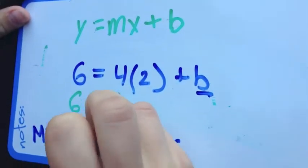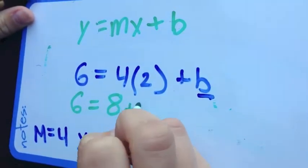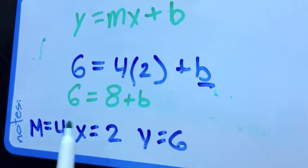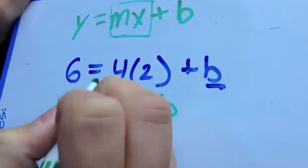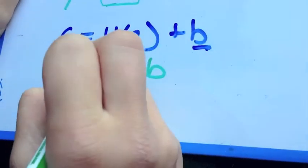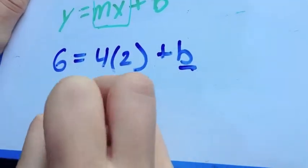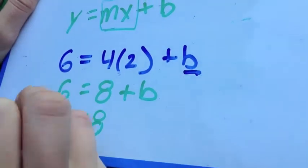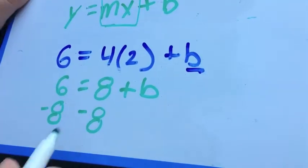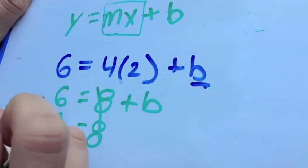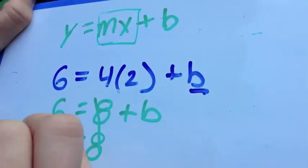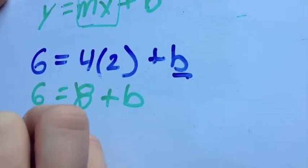6 equals 8 plus b. Now you have to subtract 8 from both sides. You do this to cross out the 8. But what you do to one side, you have to do to both. A positive 8 plus a negative 8 equals 0. What's 6 minus 8? Negative 2.